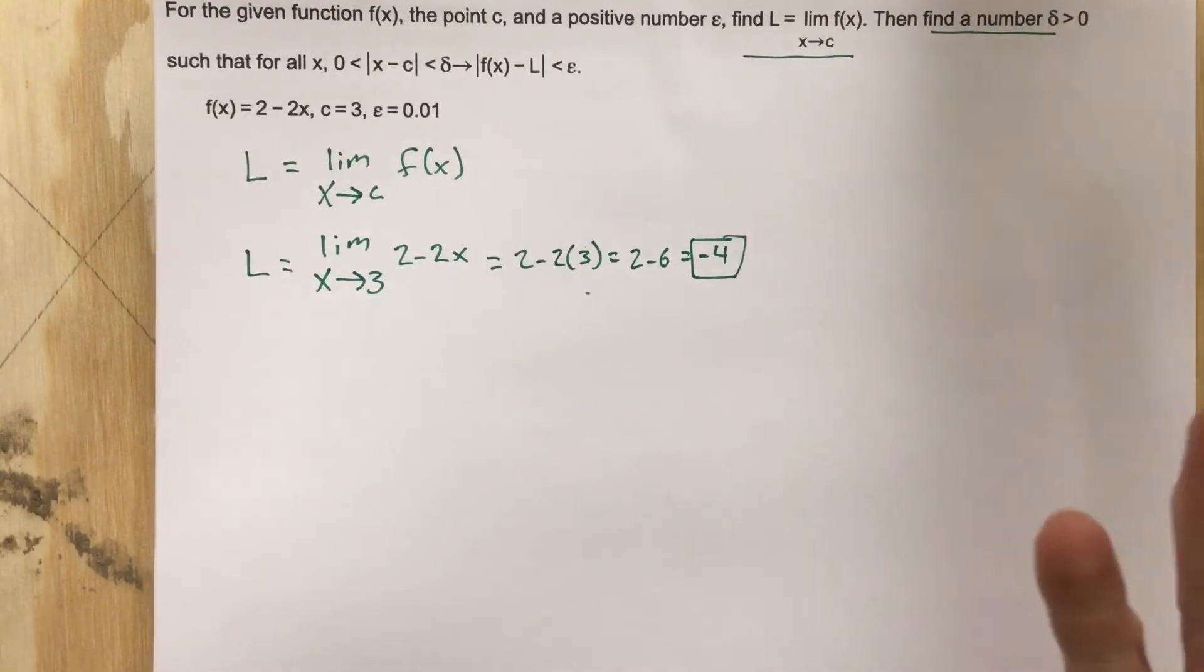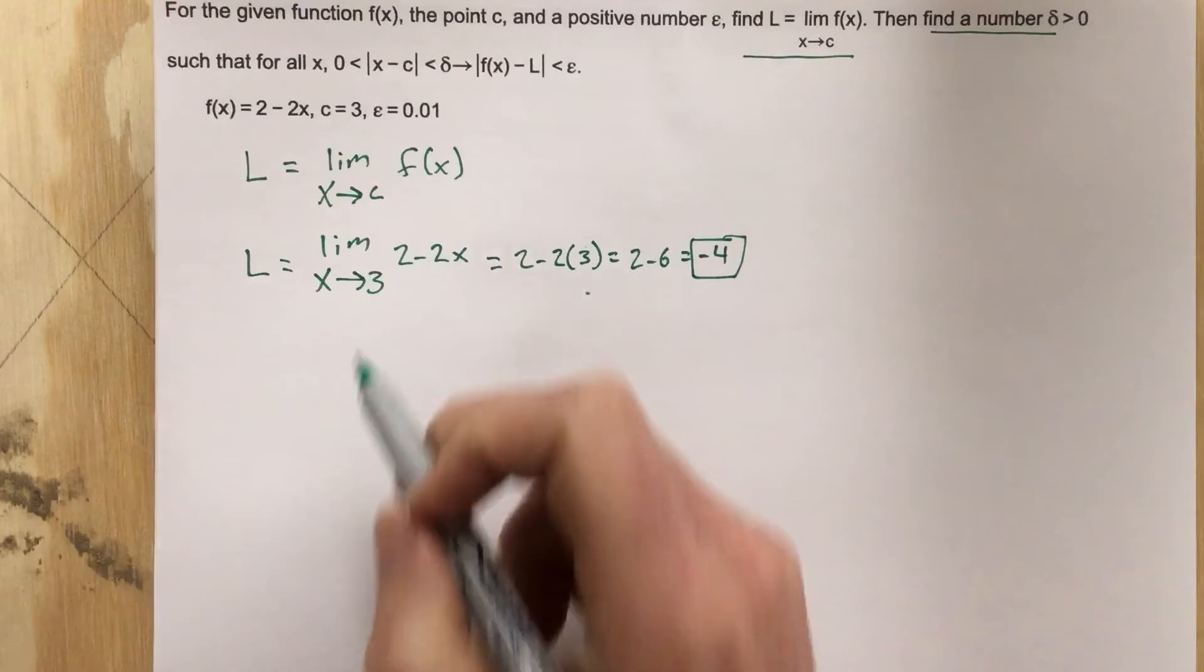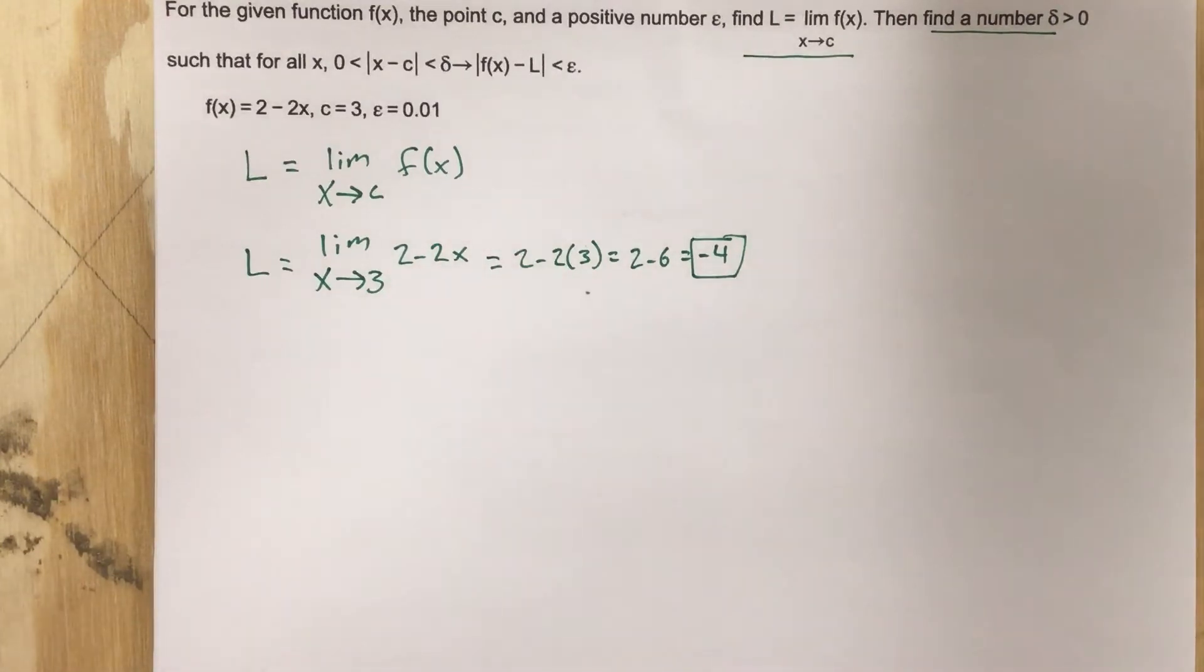So our L value, meaning our limit, is negative 4 as x approaches 3.